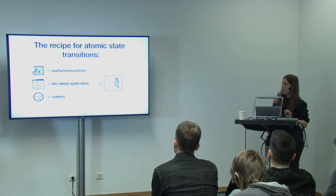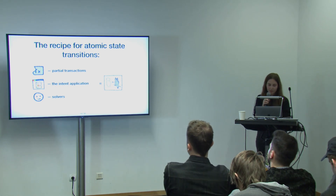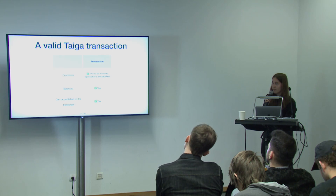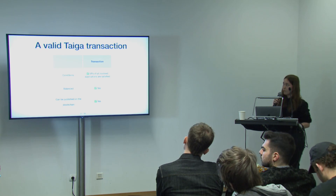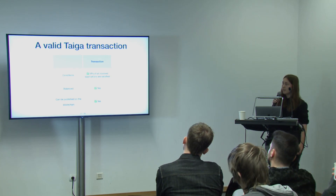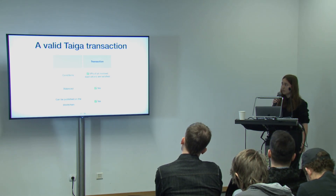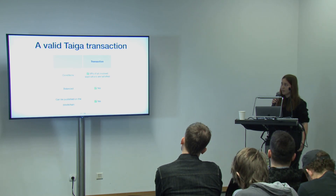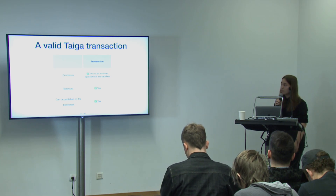Here's the recipe for atomic state transitions — it takes three components: partial transactions, intent application, and solvers. A valid Tyga transaction must satisfy two properties: first, validity predicates of all involved applications are satisfied. What makes an application involved is if the transaction tries to change a note that belongs to that application — the application needs to approve it. The second property is that the transaction needs to be balanced.